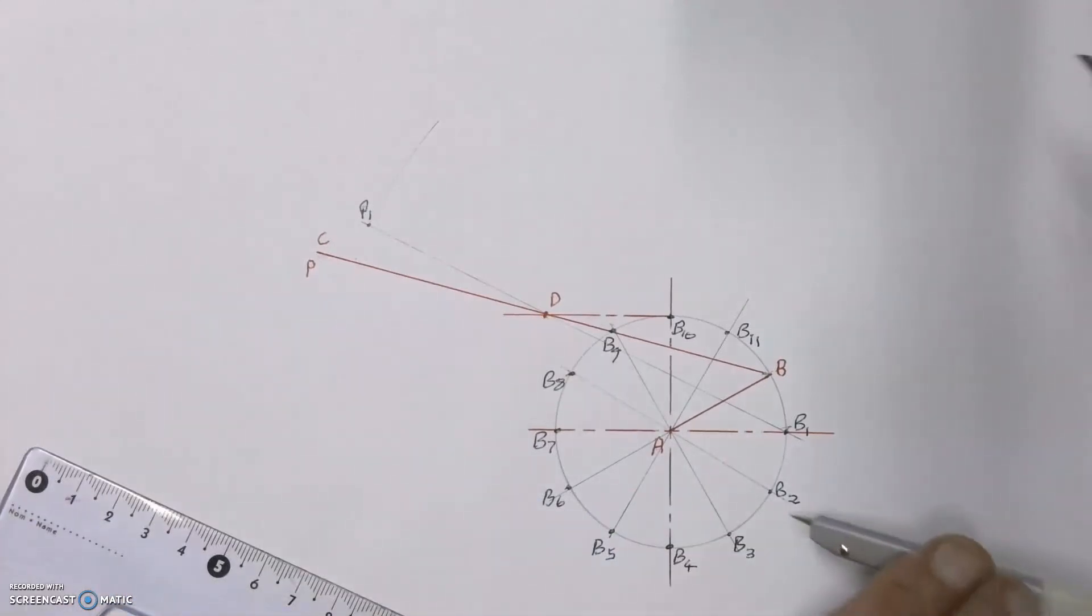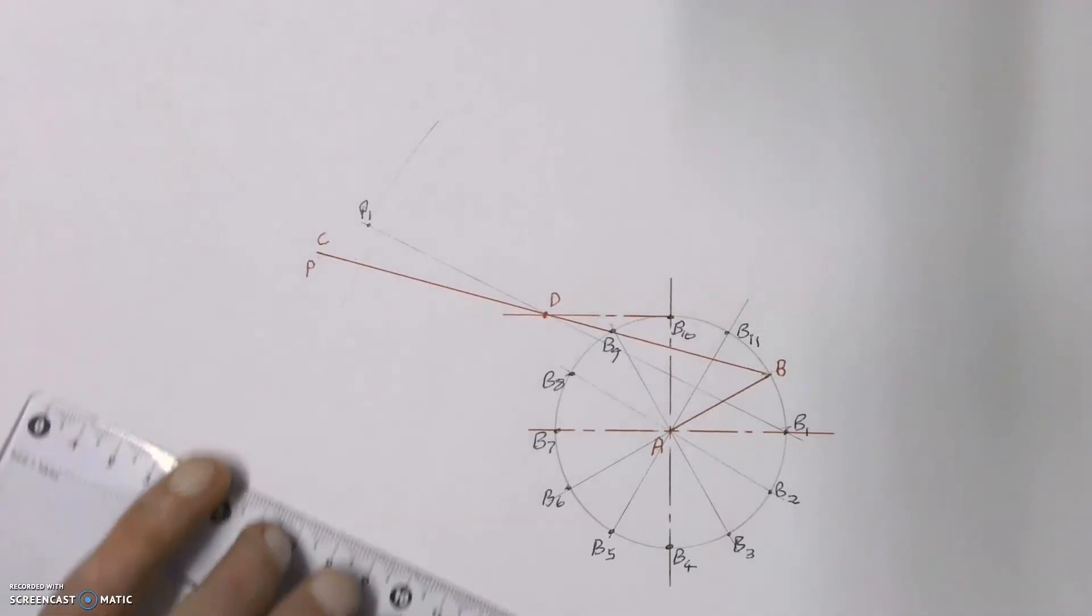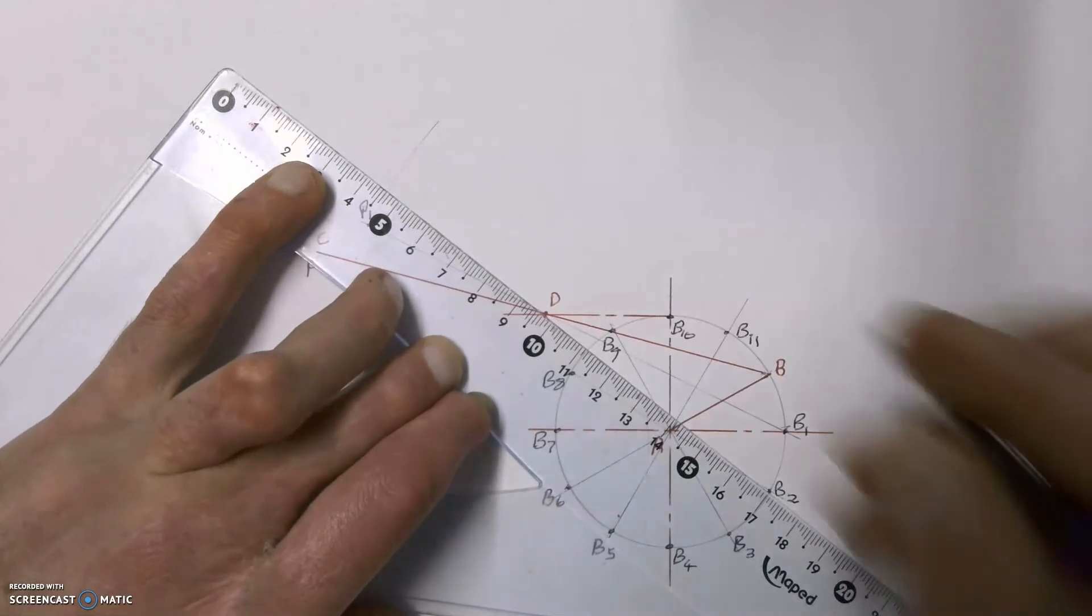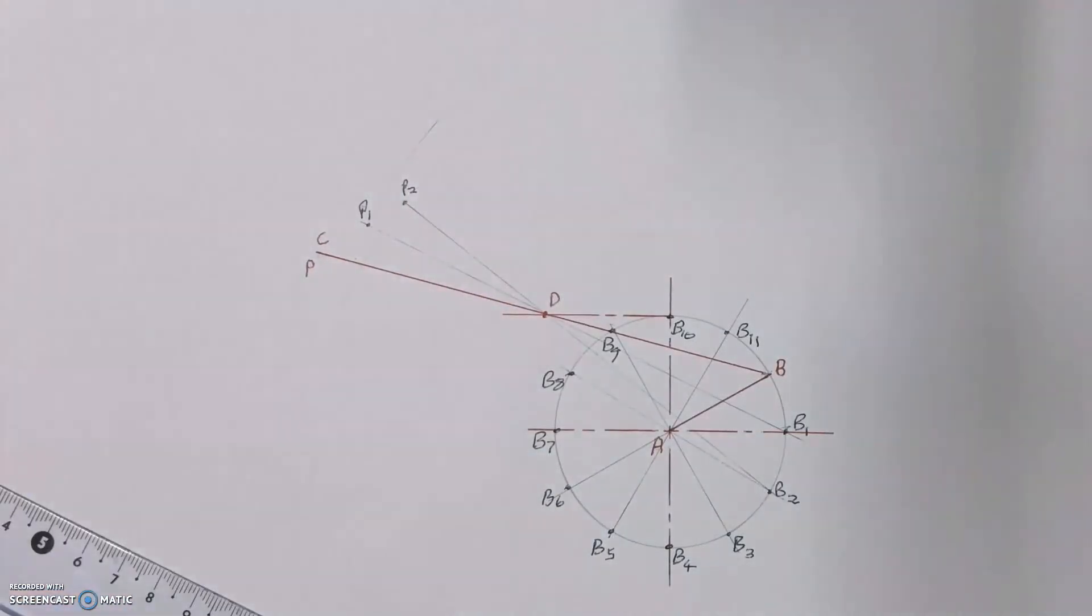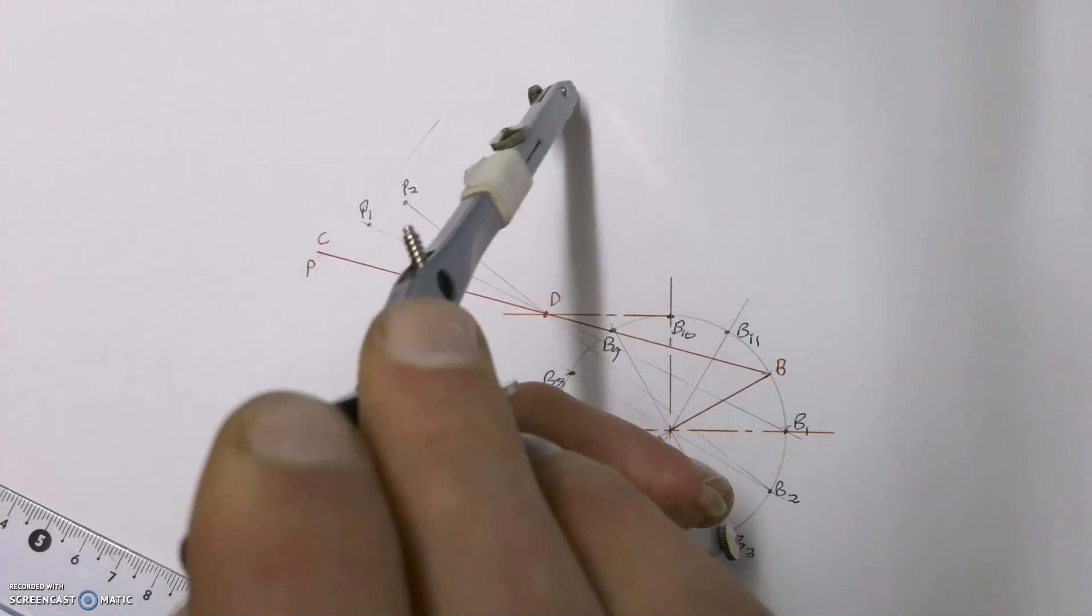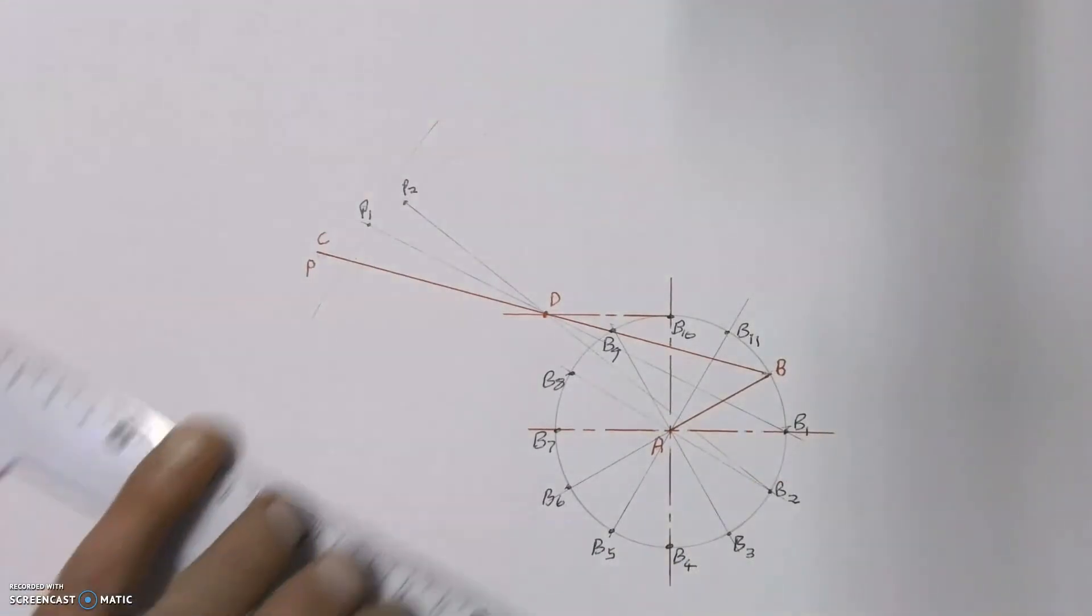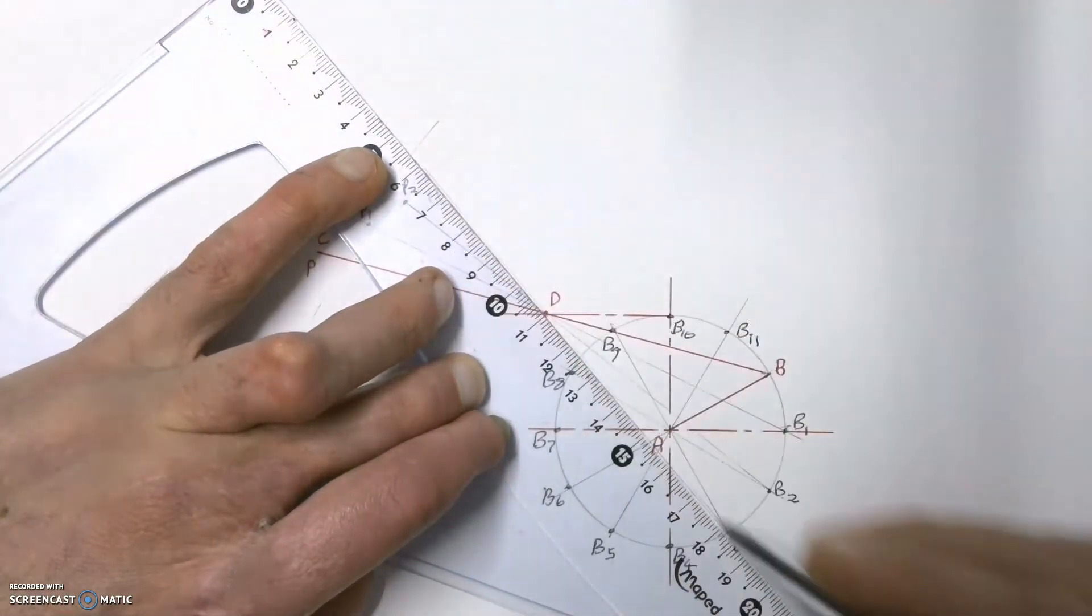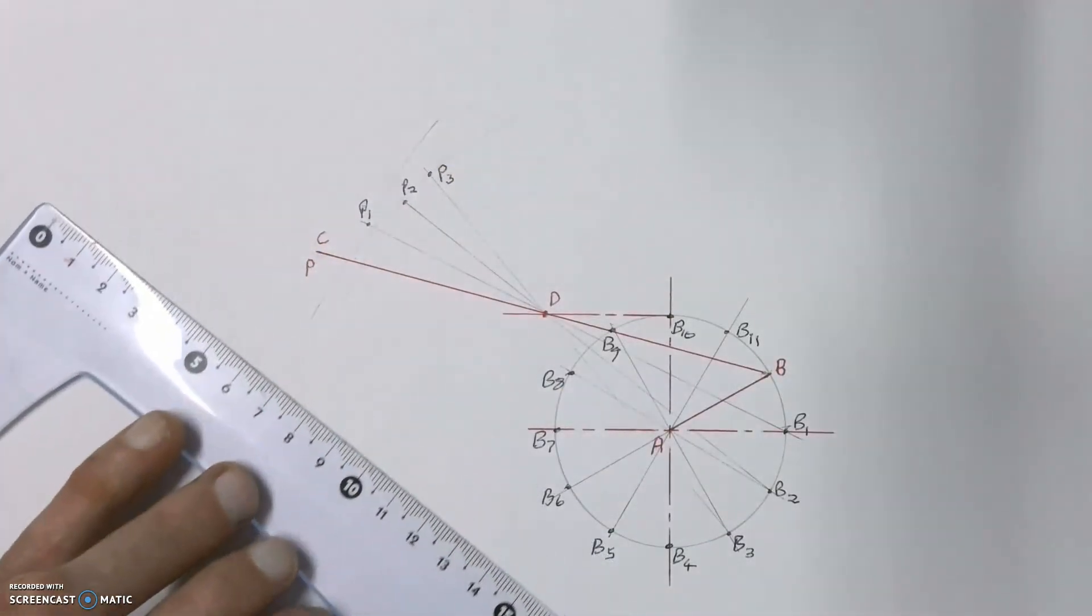We do the same thing again from B2. Place our compass on B2 the length of our original arm, make another arc, and then join from B through point D until it hits that arc. That will be P2 and we keep going with the same process all the way around for all 12 parts. Another arc and again from B3 through point D, mark that as P3.